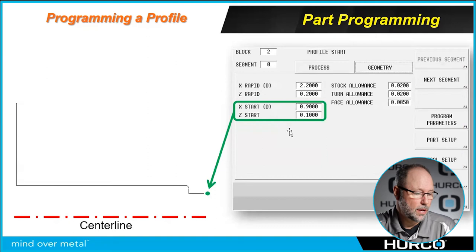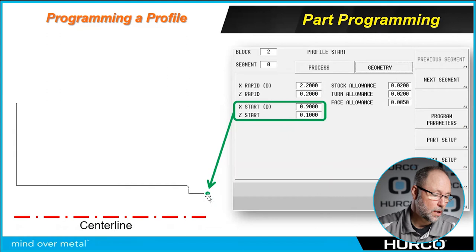The next two fields we see here are the X start and Z start. This is where the profile is going to begin. If you see the shape of the profile drawn here, we're starting at this green dot. We're going to move into the face of the part, come up, break this corner, turn back, then come up off the part.